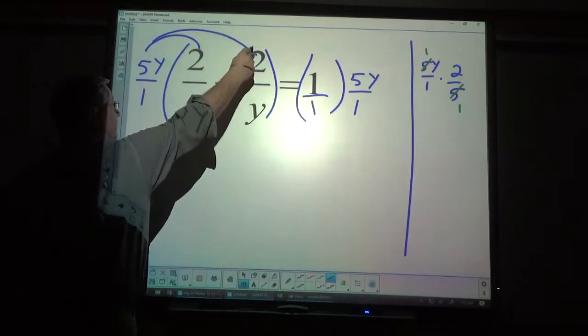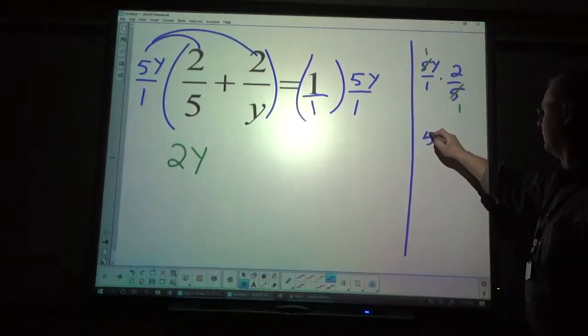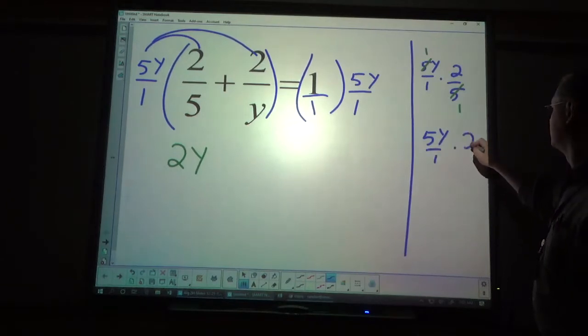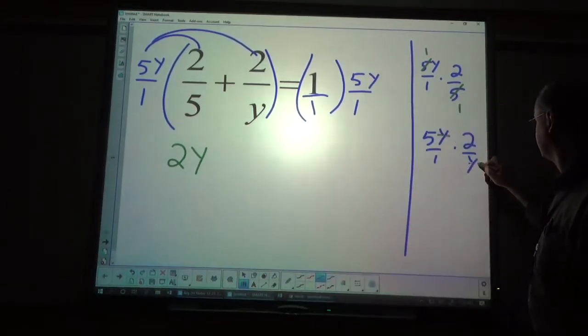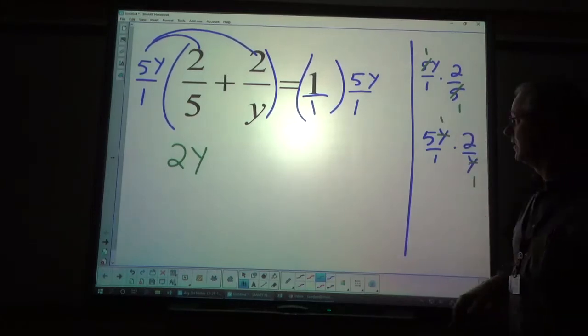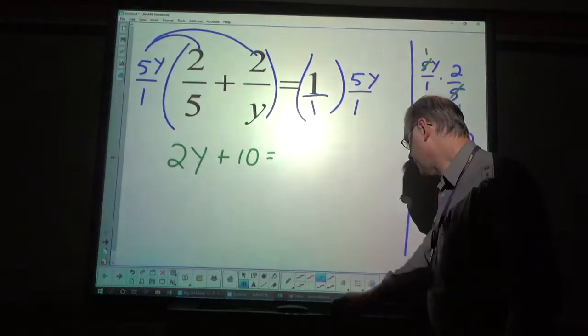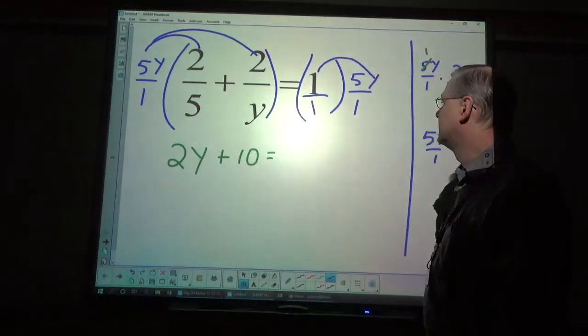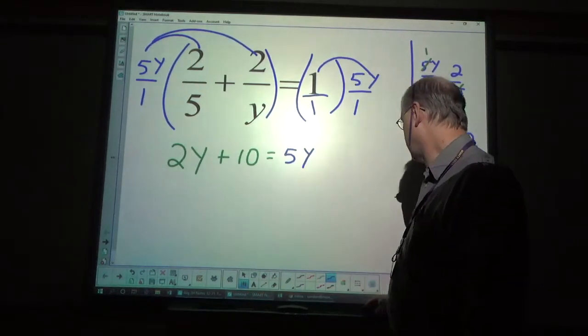I need to multiply here. The same kind of situation. 5y over 1 times 2 over y. This time, the ys cancel out, leaving me with 10. And, of course, when I distribute 5y times 1, it's just 5y.